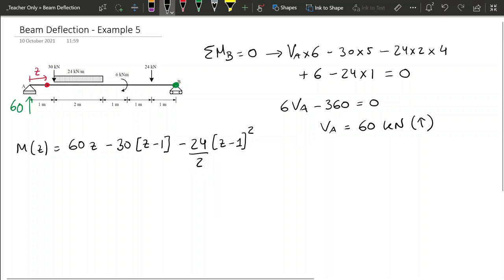Now the way that we take into consideration that the load of 24 finishes at z equals 3 is by adding a term 24 over 2 and that z minus 3 and then squared.